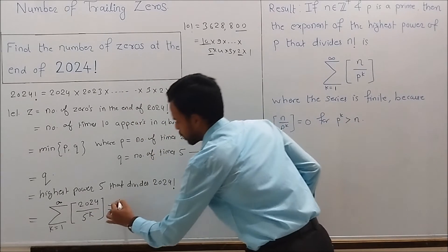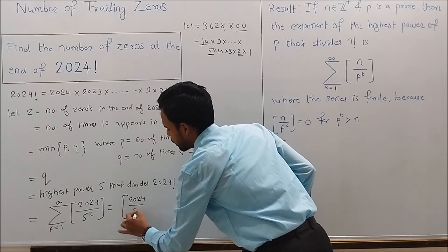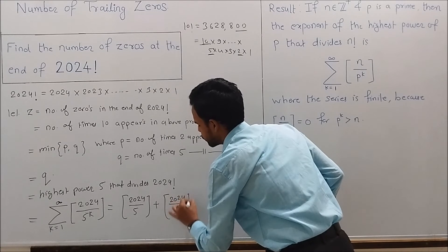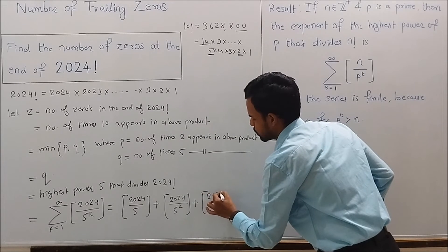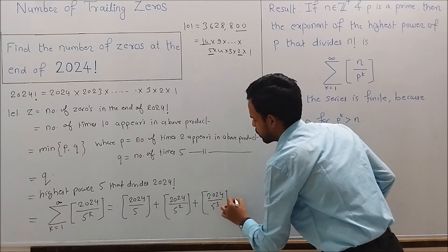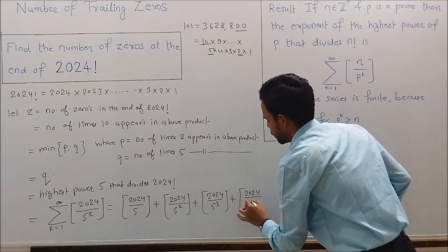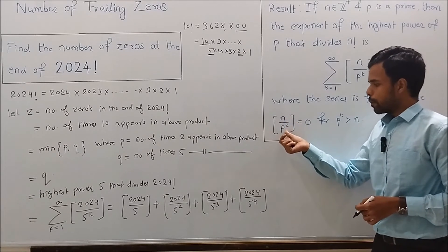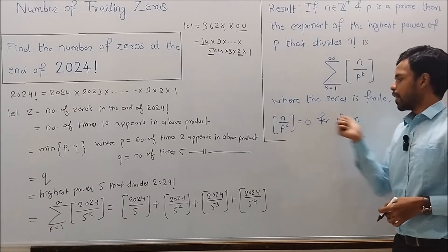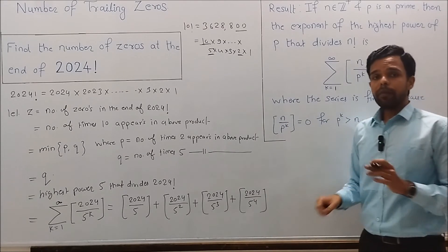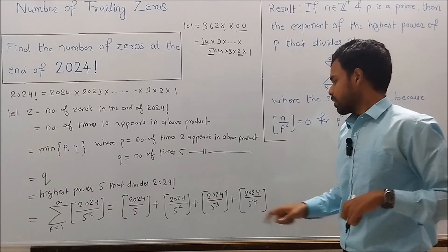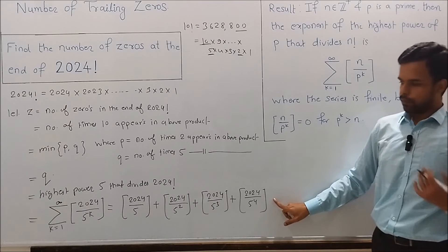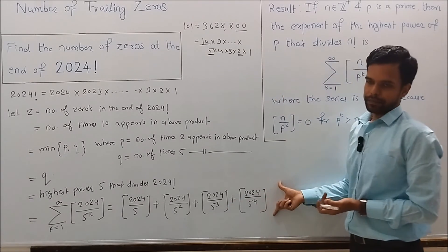Expanding the sum: floor(2024 / 5^1) + floor(2024 / 5^2) + floor(2024 / 5^3) + floor(2024 / 5^4). The next term would have denominator 5^5 = 3125, which is greater than 2024, so floor(2024 / 3125) = 0. Therefore all terms from k = 5 onwards are zero, and we only need to sum up to k = 4.